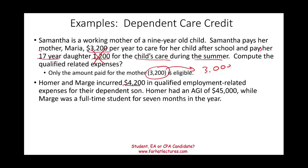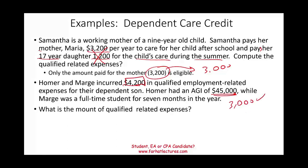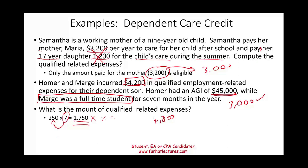Example two: Homer and Marge incurred $4,200 in qualified employment-related expenses for their dependent son. Homer had an AGI of $45,000, while Marge was a full-time student for seven months of the year. They have one child, so the maximum is $3,000, but since Marge is a full-time student, her deemed earned income is 7 months × $250 = $1,750. So the eligible qualified expense is $1,750. If Marge were simply not working and staying home, the qualified expense would be zero because both spouses generally need to be working or qualify.